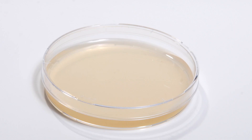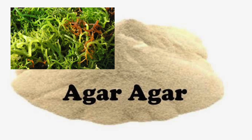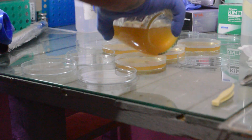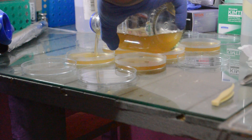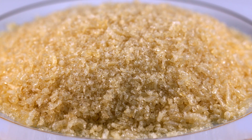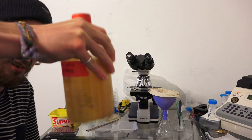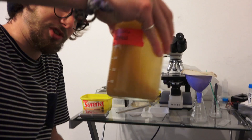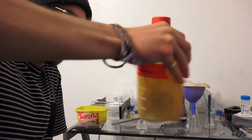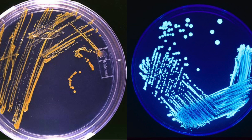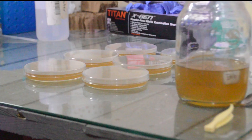Solid media is the same as broth but with a gelling agent extracted from seaweed called agar added, allowing the material to be cast into petri dishes and hold its shape. Agar is used instead of gelatin because most organisms can break down gelatin but can't break down agar. Broth is good for growing large quantities of organisms, while plates allow you to isolate single cells and do analysis, though they aren't great for producing large quantities.